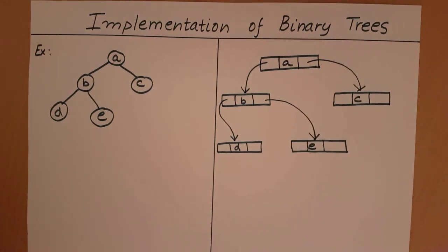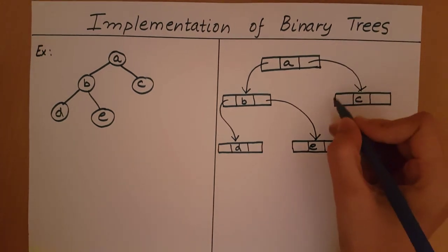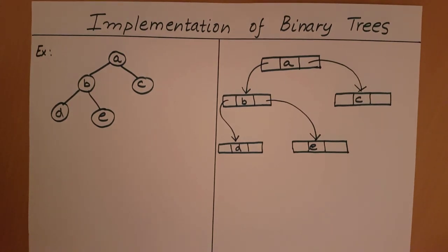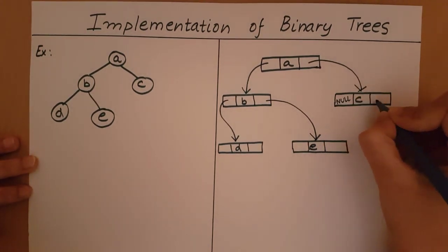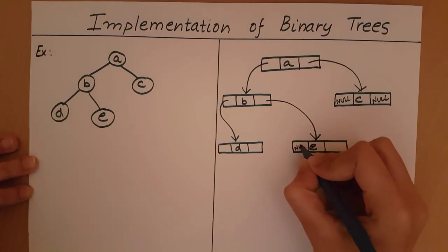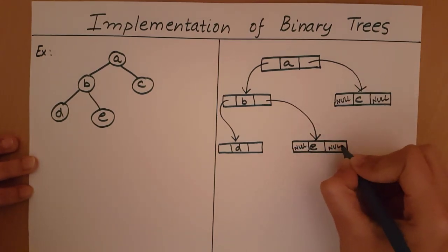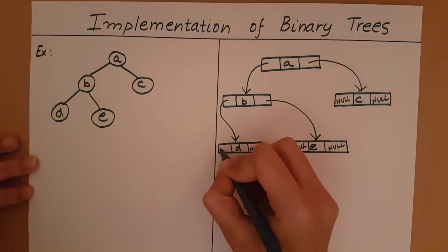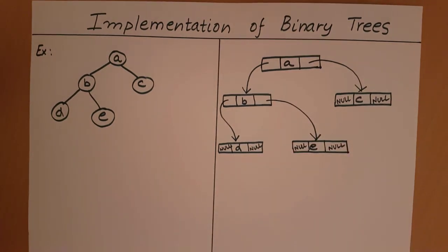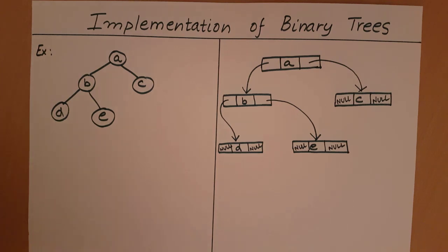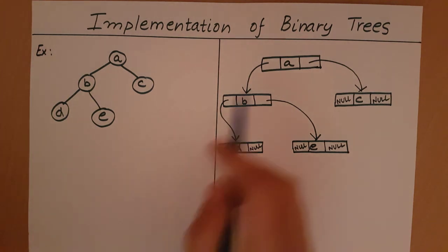When a node does not have a right or a left child, then the respective pointer will be set to null. This is the basic idea of how to implement a tree using a linked list. Now, one variation to this is when we also store or keep track of the parent of a node.